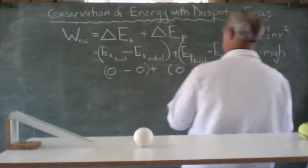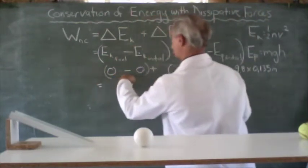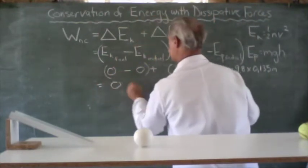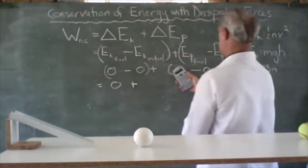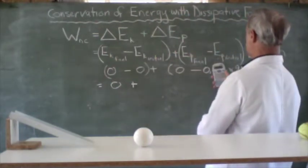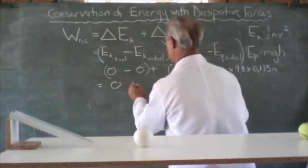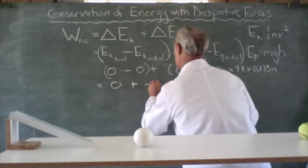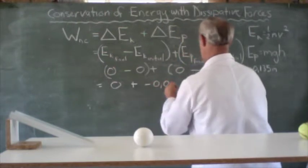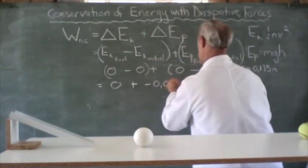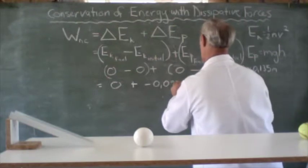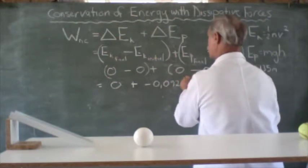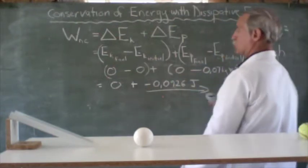So this all adds up to 0 plus 0 minus our answer. So it becomes minus 0.0926. And our answer is measured in joules.